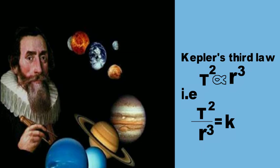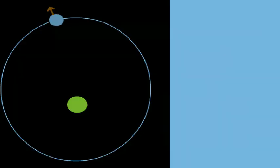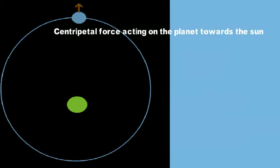If a planet is revolving around the sun in a circular orbit in uniform circular motion, then the centripetal force acting on the planet towards the sun must be F = mv²/r.